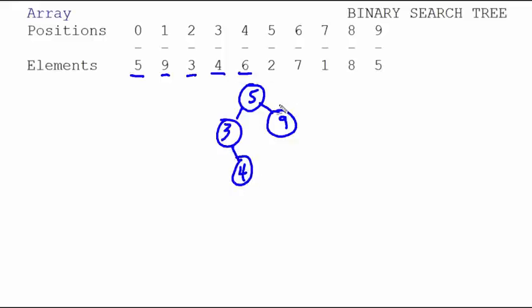The six is greater than the five, slides to the nine, less than the nine, so it slides to the left of the nine. The two is going to slide left, slide left again, and settle right there.